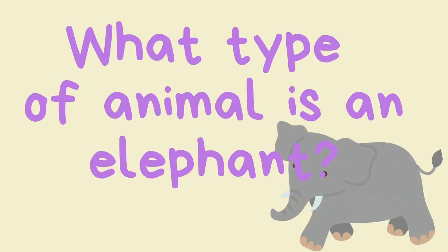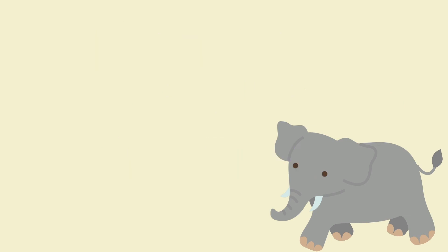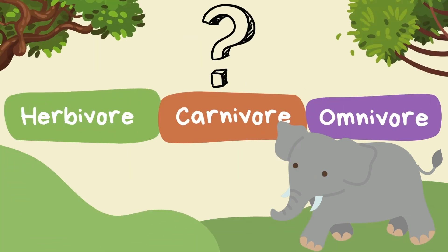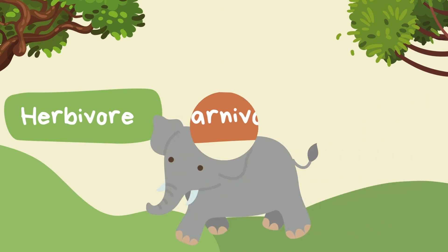What type of animal is an elephant — herbivore, carnivore, or omnivore? It's a herbivore!